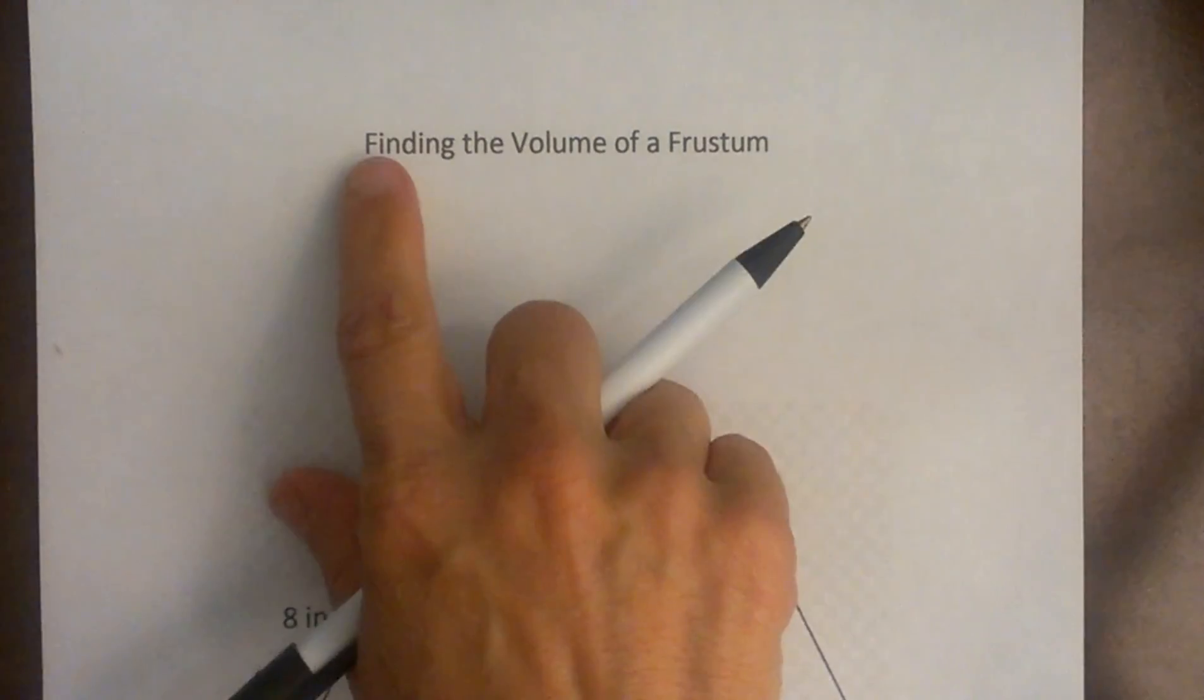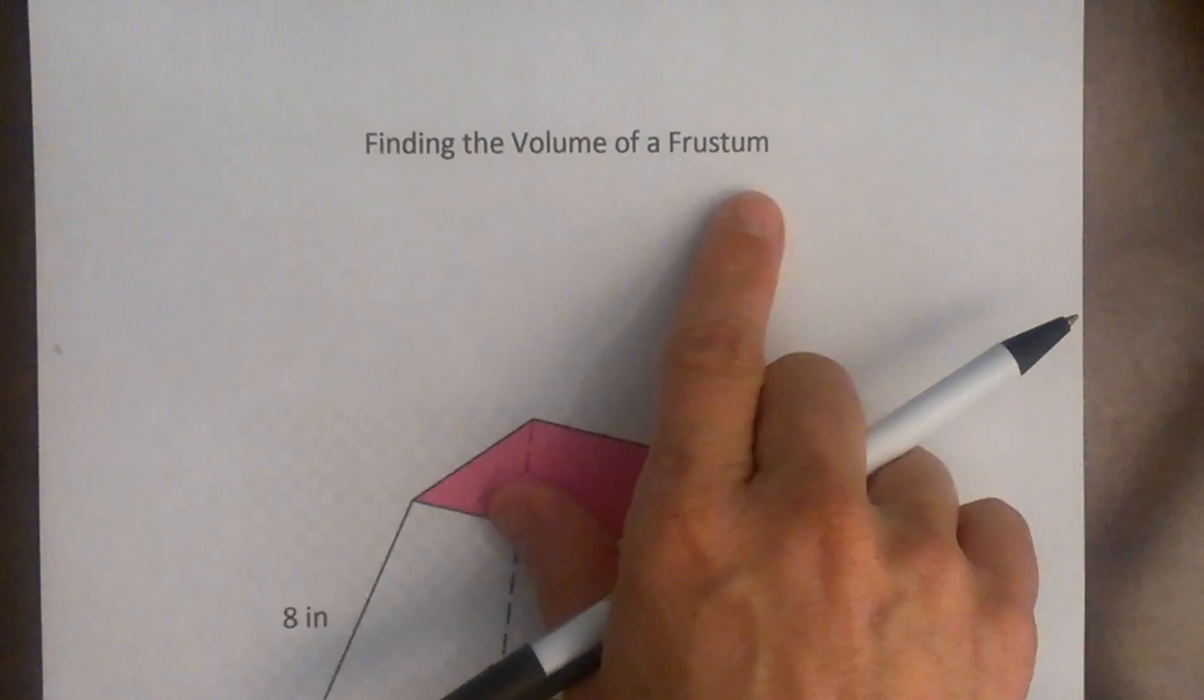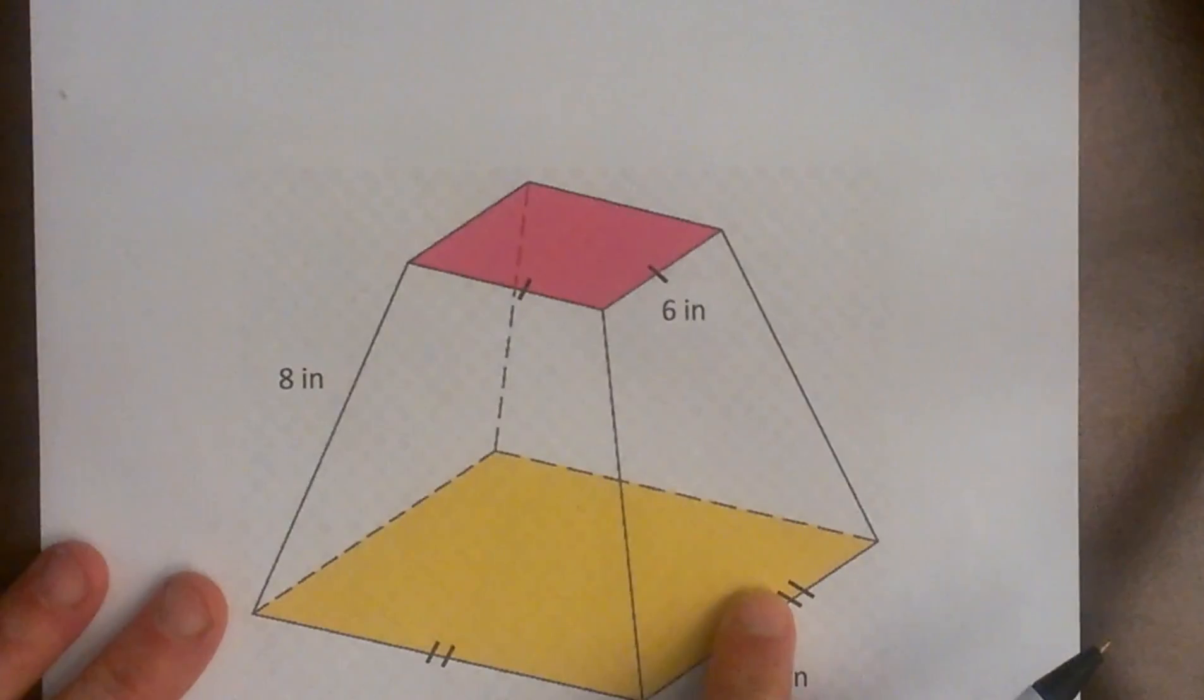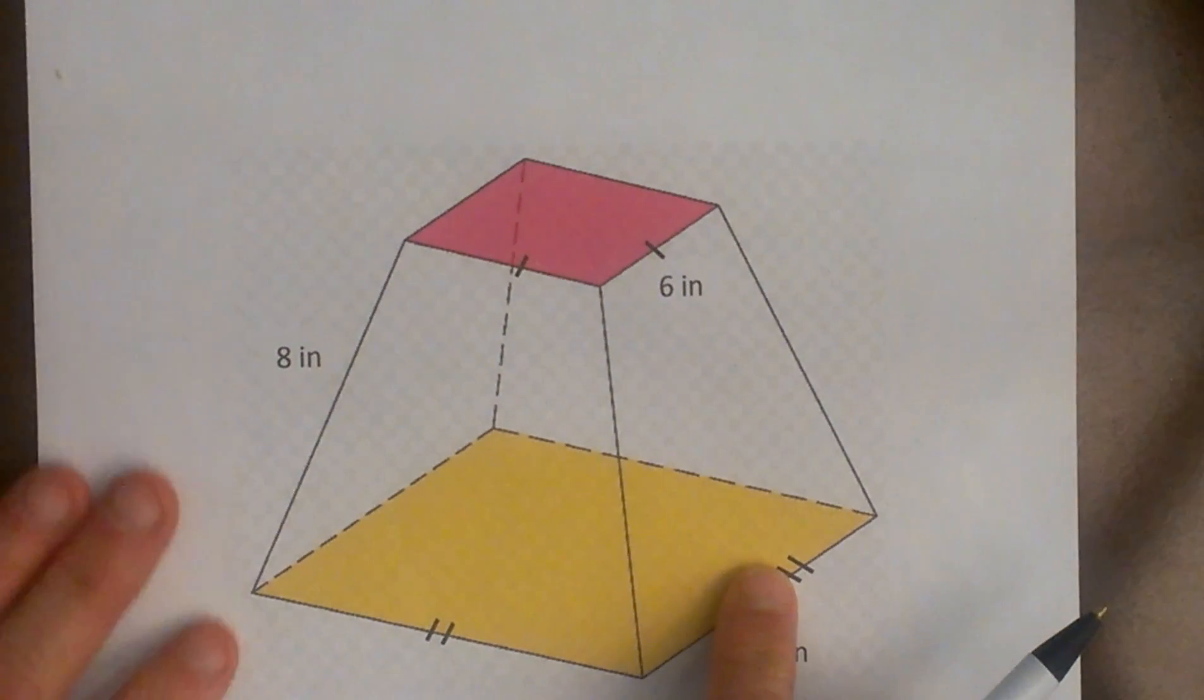Hi! Welcome to Moo Moo Math. Today we are going to find the volume of a frustum. What is that? Well that is a chopped off pyramid, basically what it is.